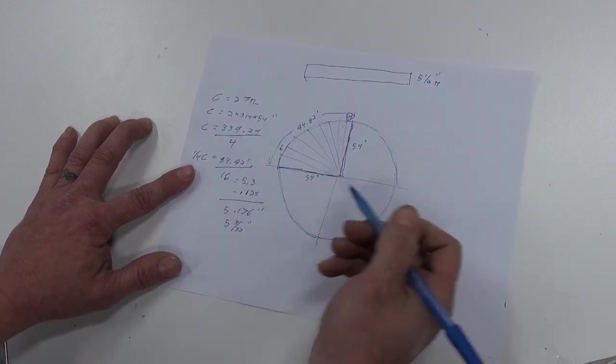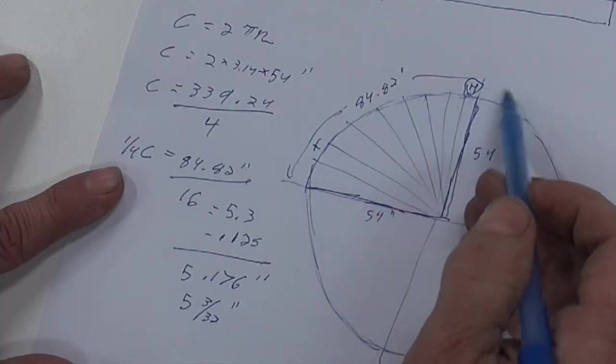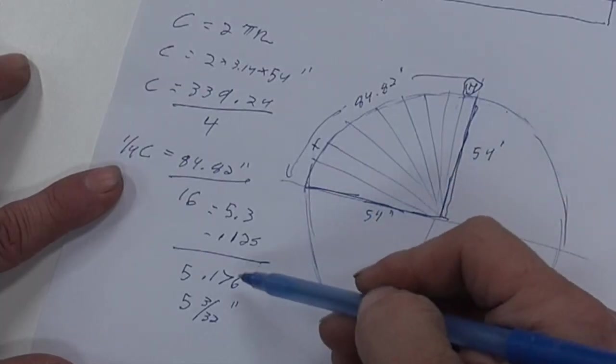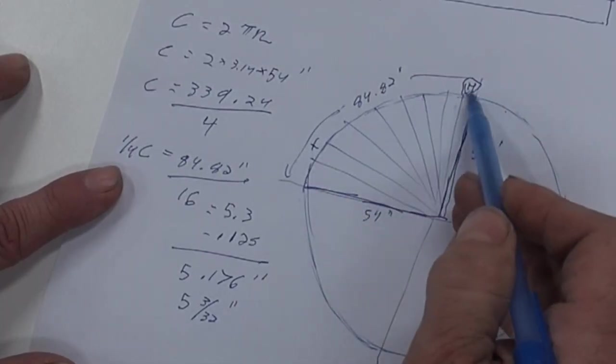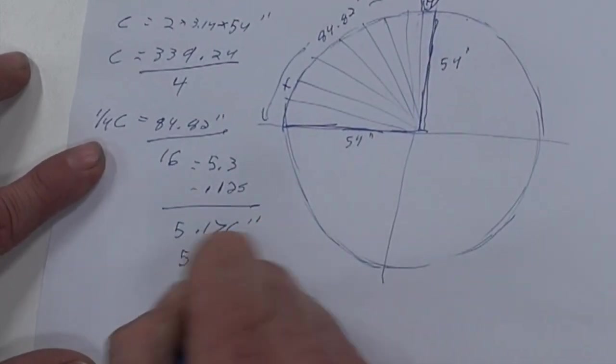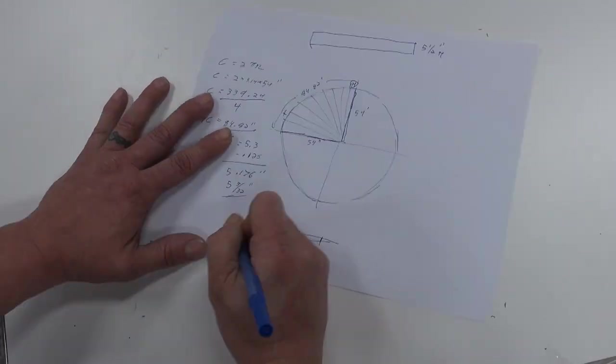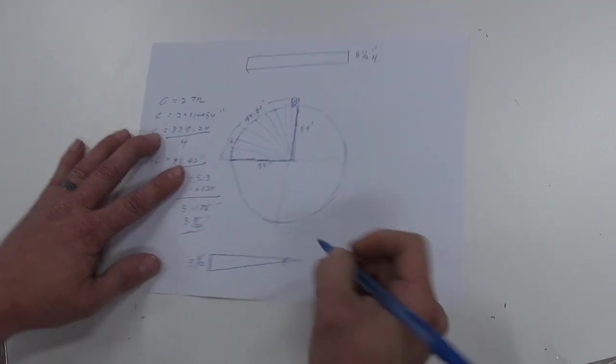Now a 32nd is very important because if you have 16 pieces and you're off a 32nd of an inch, that's a half an inch overall. So that 32nd is very important. So 5 and 3 32nds on this end.